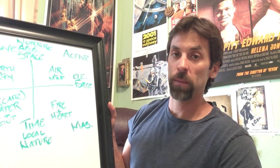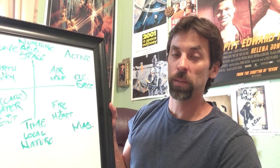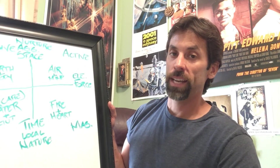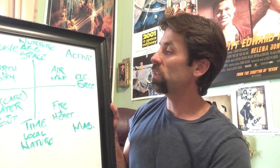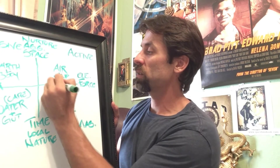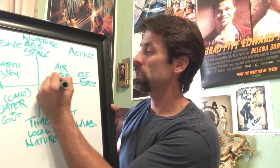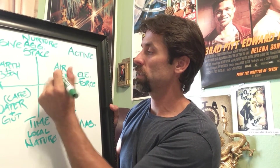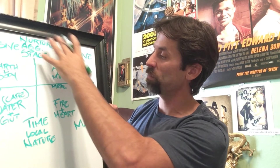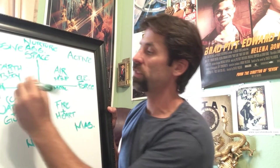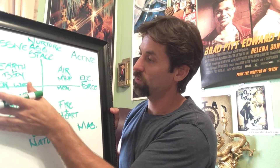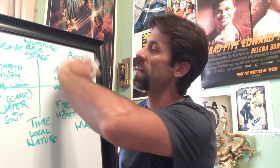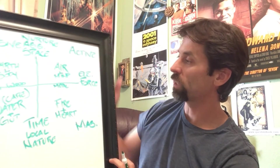Now there are two other elements that are sometimes incorporated in the plates. I'm going to include those here as well, because we're going to be looking at the internal nature of yourself. Those elements are metal, which takes from the air and brings to the earth, and wood, which takes from the earth and brings to the air. So metal and wood.